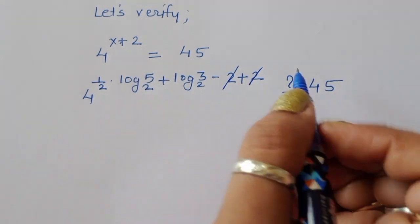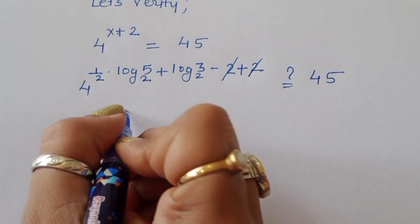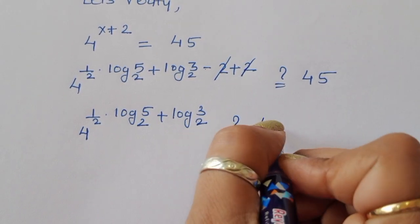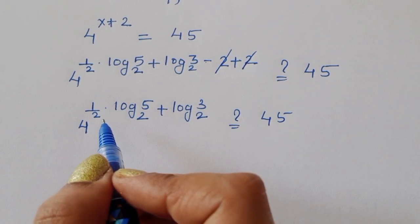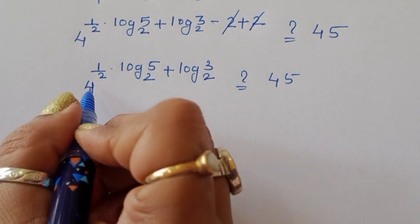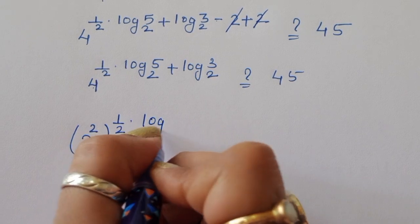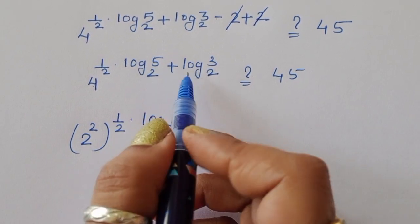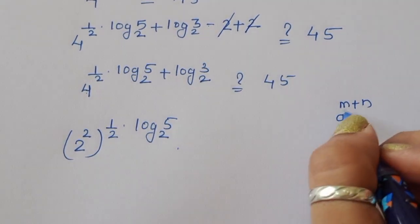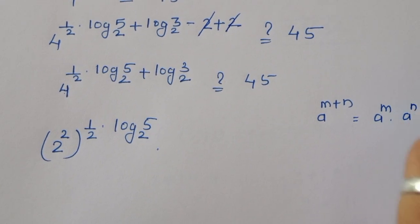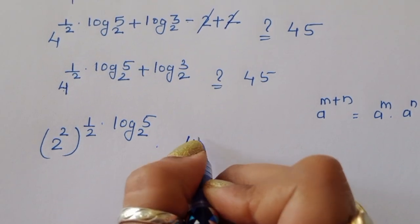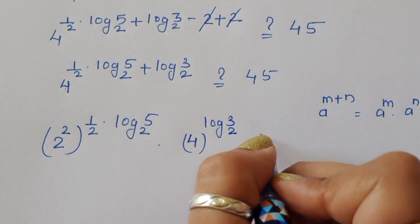The minus 2 and plus 2 cancel, leaving 4 power of 1 upon 2 times log of 5 to the base 2 plus log of 3 to the base 2, question mark 45. Writing 4 as 2 squared, and applying the formula a power m plus n equals a power m times a power n, we separate the terms into 4 power log of 5 to the base 2 times 4 power log of 3 to the base 2.